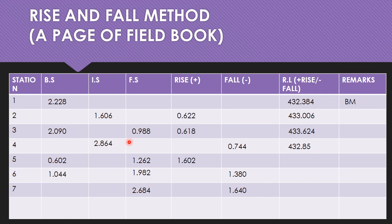For station 5 there is a rise, so 432.850 plus 1.602 gives a reduced level of 434.452. For station 6 there is a fall, so subtracting 1.380 from 434.452 gives a reduced level of 433.072. For station 7 there is a fall, so subtracting 1.640 from 433.072 gives a reduced level of 431.432. We have now found all the reduced levels.